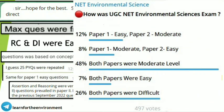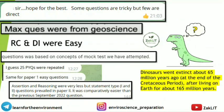A poll conducted on the Telegram page with around 497 to 500 students showed that 48% found both papers to be of moderate level. Overall, the paper can be described as moderate to easy — it was not difficult. We now wait for results. Subscribe to the channel for further updates and preparation for the next exam. All the best to everyone!